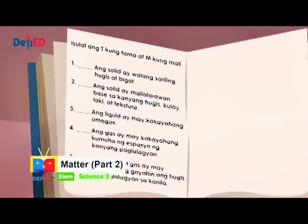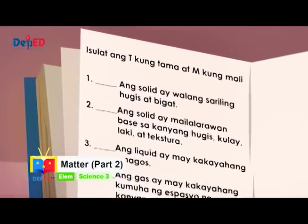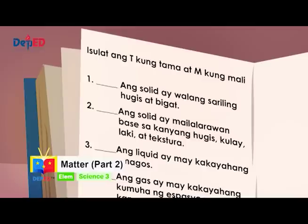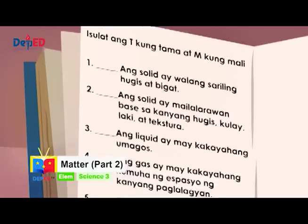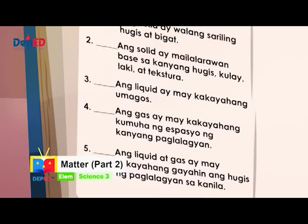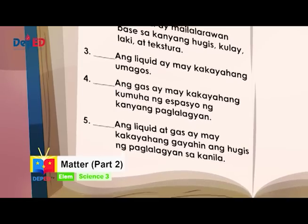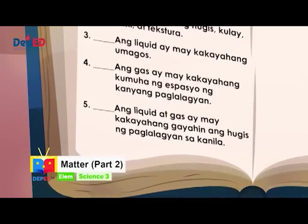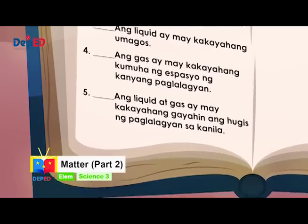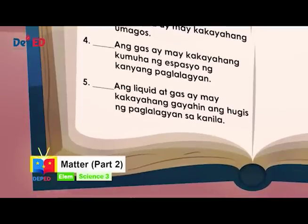Panuto: isulat ang T kung tama at M kung mali. Para sa unang bilang, ang solid ay walang sariling hugis at bigat. Para sa ikalawang bilang, ang solid ay mailalarawan base sa kanyang hugis, kulay, laki at tekstura. Para sa ikatlong bilang, ang liquid ay may kakayahang umagos. Para sa ikaapat na bilang, ang gas ay may kakayahang kumuha ng espasyo ng paglalagyan dito. Para sa ikalimang bilang, ang liquid at gas ay may kakayahang gayahin ang hugis ng paglalagyan dito.